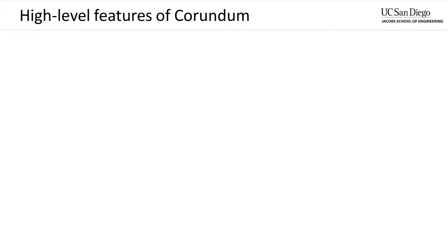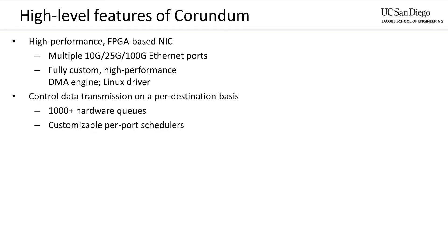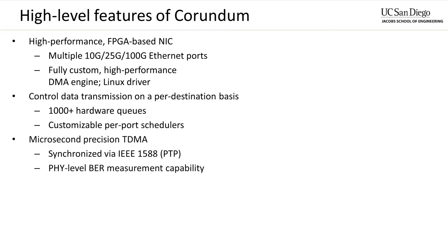First, an overview of the high-level features of Corundum. Corundum is an open-source, high-performance FPGA-based NIC that supports multiple 10G, 25G, and/or 100G Ethernet ports. It uses a fully custom high-performance DMA engine to support operation at 100 gigabit per second line rate, along with a Linux driver to connect to the Linux kernel networking stack. Using thousands of hardware transmit queues coupled with customizable per-port schedulers, Corundum can control data transmission on a per-destination or per-flow basis. The schedulers, in combination with IEEE 1588 PTP time synchronization, enable microsecond precision TDMA.